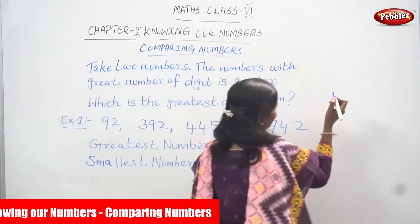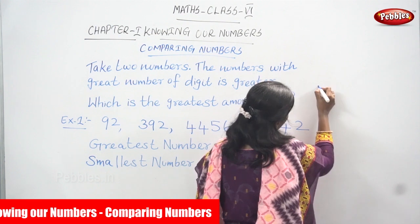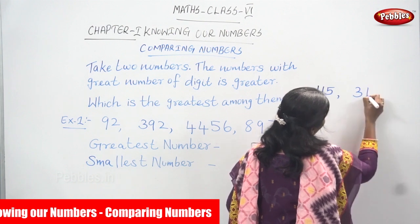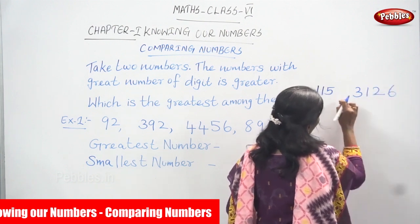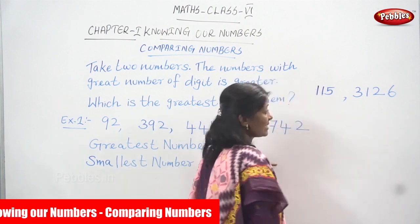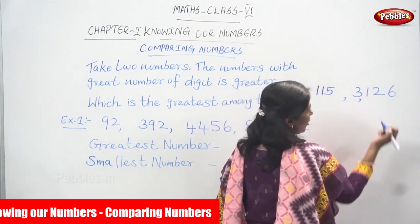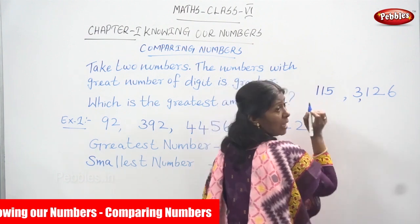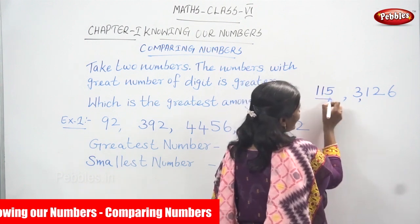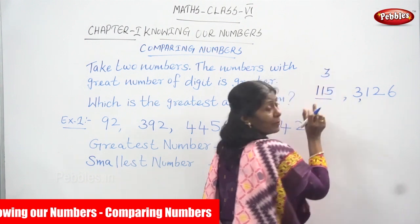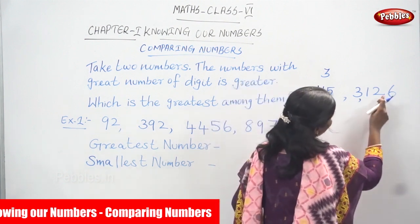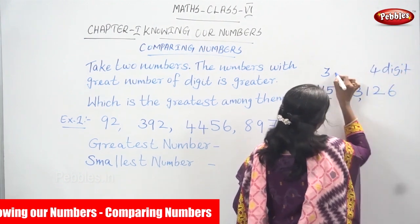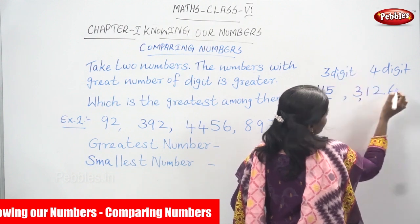Let me give a small example. Take two numbers: the first number is 115, and the second number is 3126. I am going to compare these two numbers. Look at the digits — first, you have to count them. For 115: ones, tens, hundreds — that is three digits, a three-digit number. For 3126: ones, tens, hundreds, thousands — that is four digits, a four-digit number.